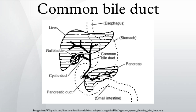The hormone cholecystokinin, when stimulated by a fatty meal, promotes bile secretion by increased production of hepatic bile, contraction of the gallbladder, and relaxation of the sphincter of Oddi.